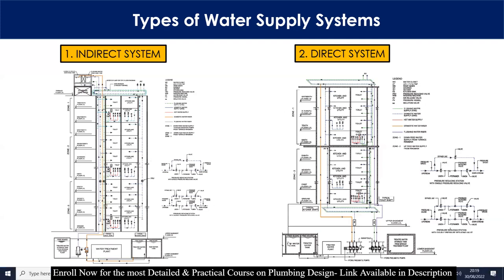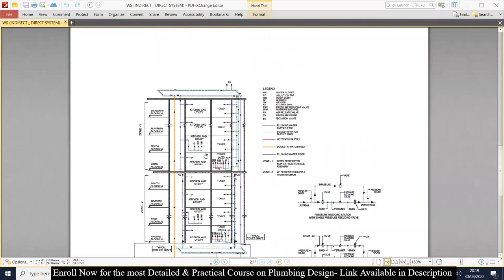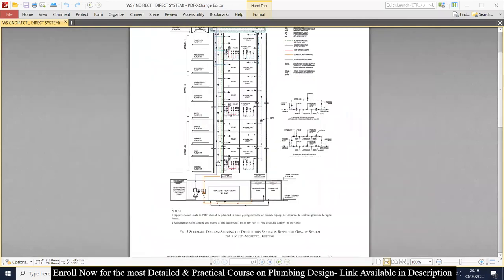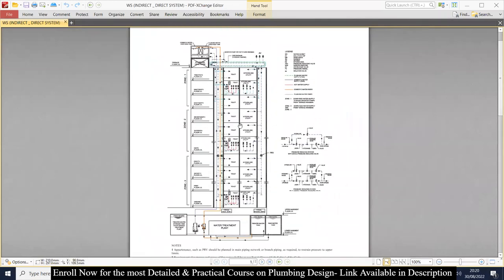I'll open this PDF to clearly explain these two systems. This one is for the indirect system. Now in this schematic there are a lot more things to understand, but at this level we will only understand how the arrangement is done, the storage of water, and how it is supplied.